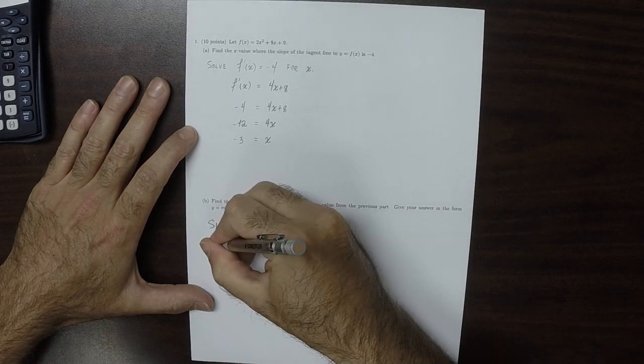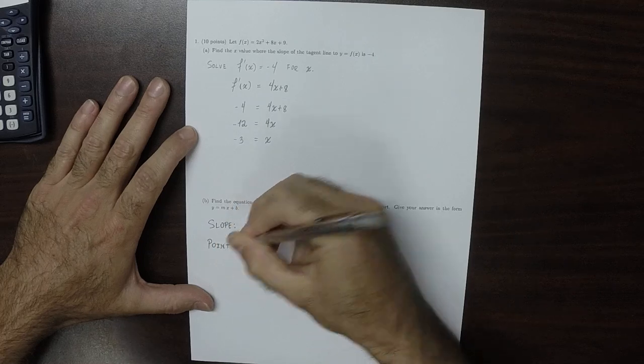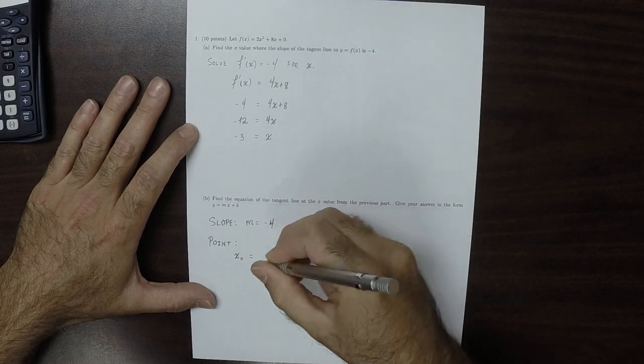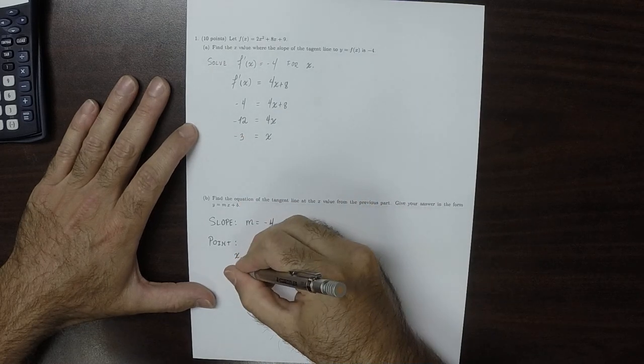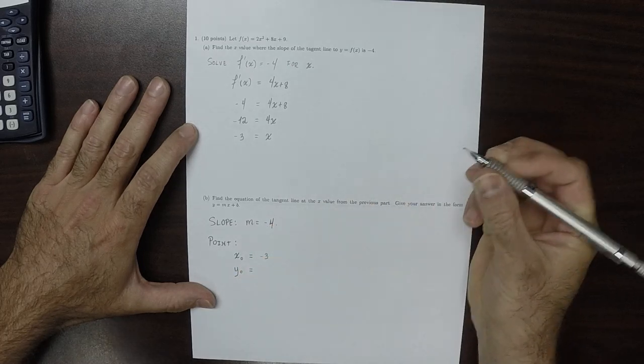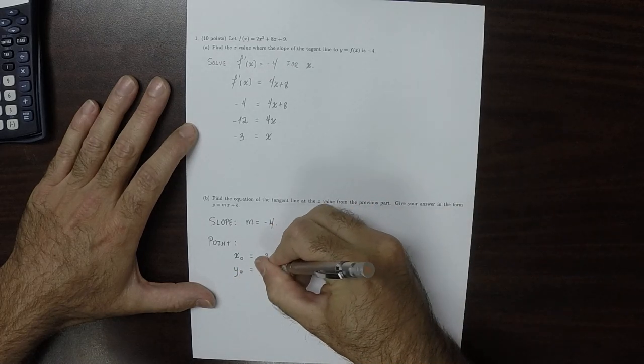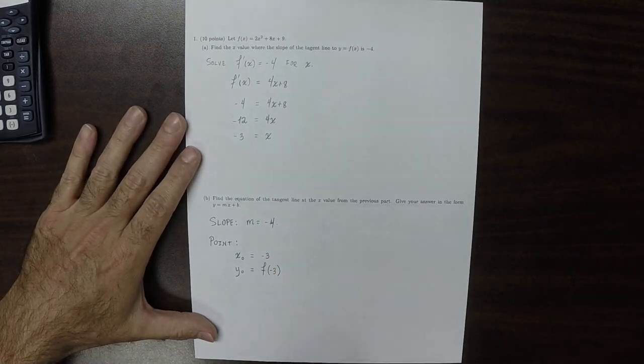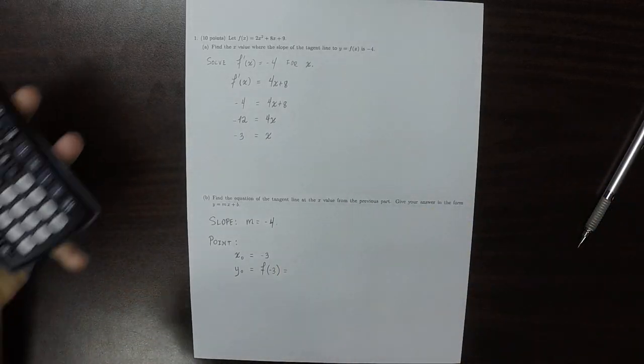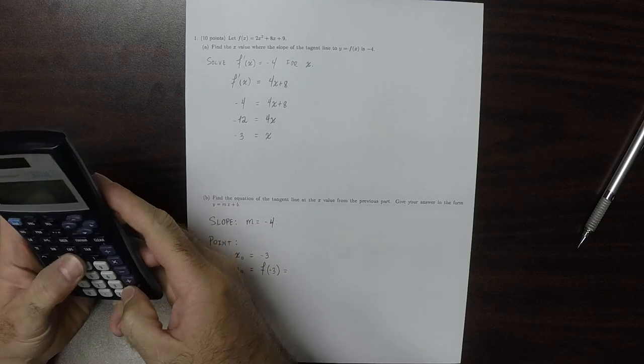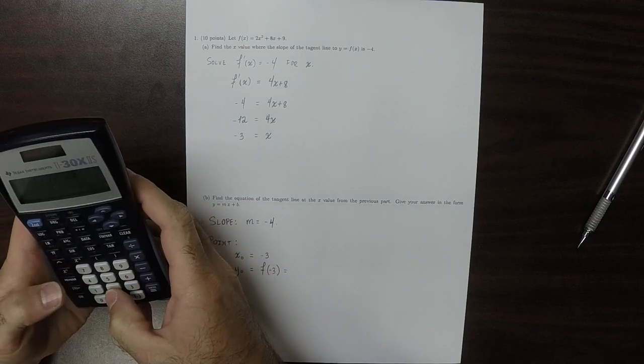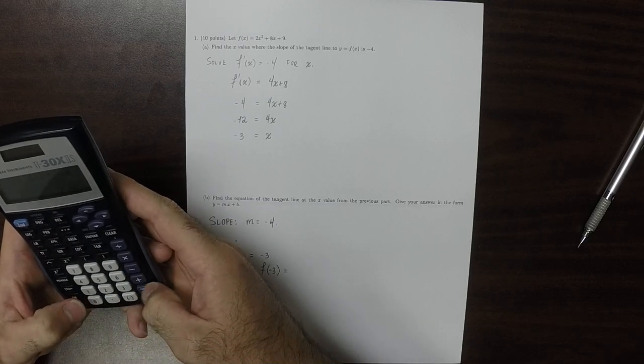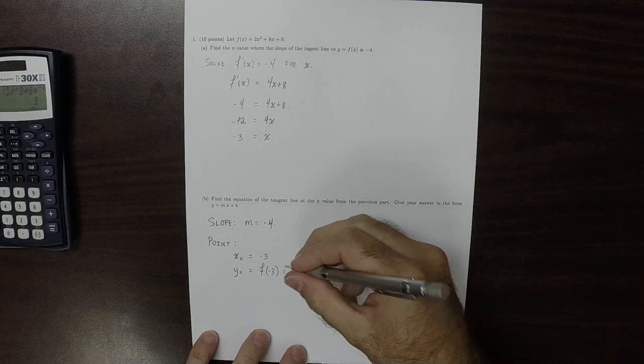What we really need to compute next is the point. We know that the x value of the point is negative 3, and the y value will be whatever you get when you plug in negative 3. So then plugging that in with the calculator into the original function, that's 2 times negative 3 squared plus 8 times negative 3 plus 9. So that happens to be 3.